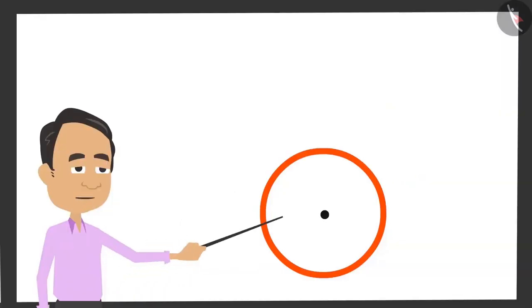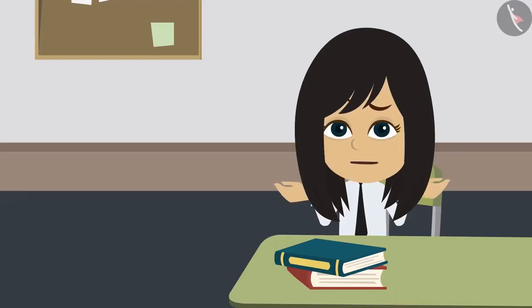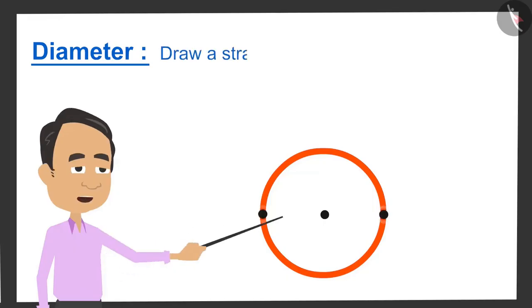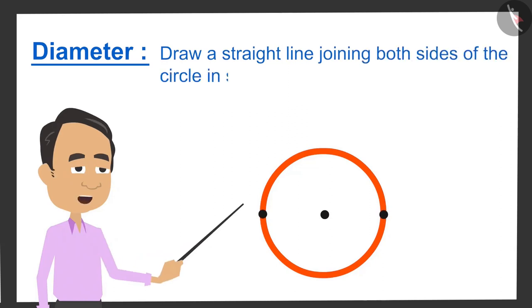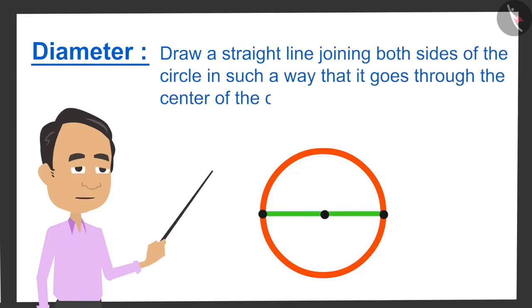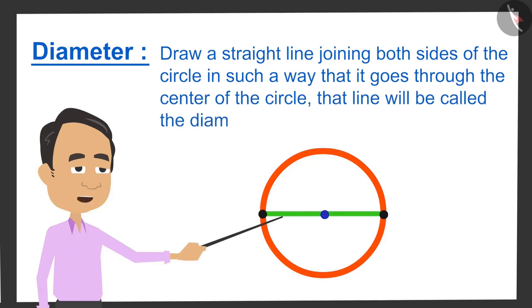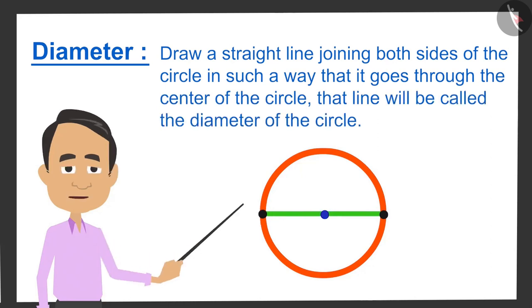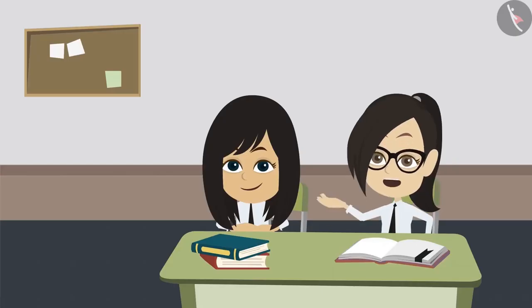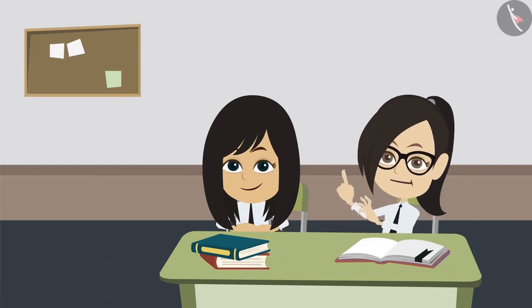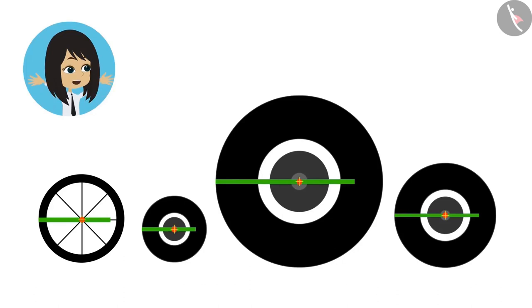The second property of a circle is the diameter. If we draw a straight line joining both sides of the circle in such a way that it goes through the centre of the circle, then that line will be called the diameter of the circle. This means that we have to measure its diameter to measure the circle. If we measure the diameter of all the wheels, then we can tell the difference between the wheels.